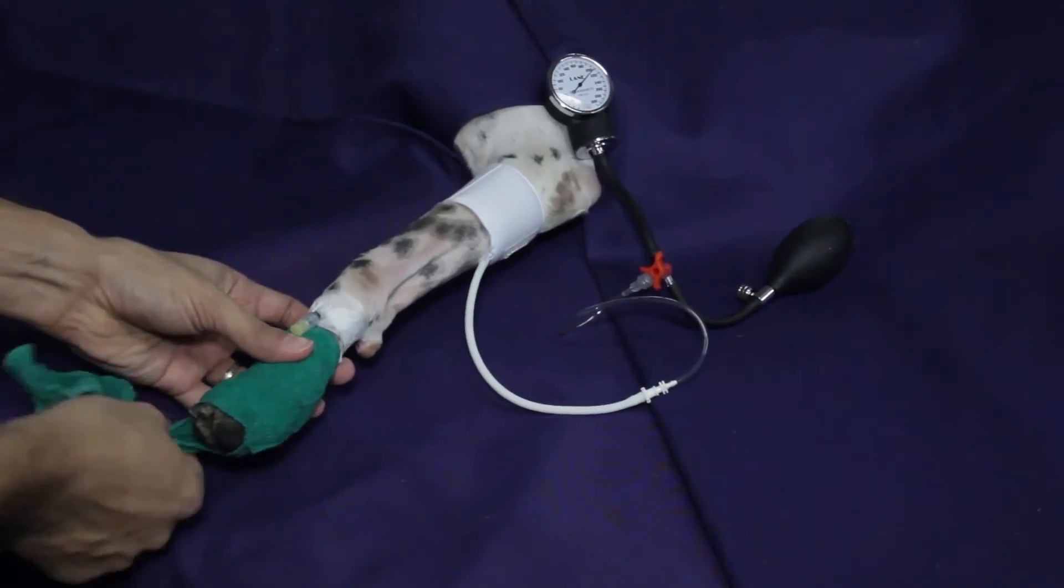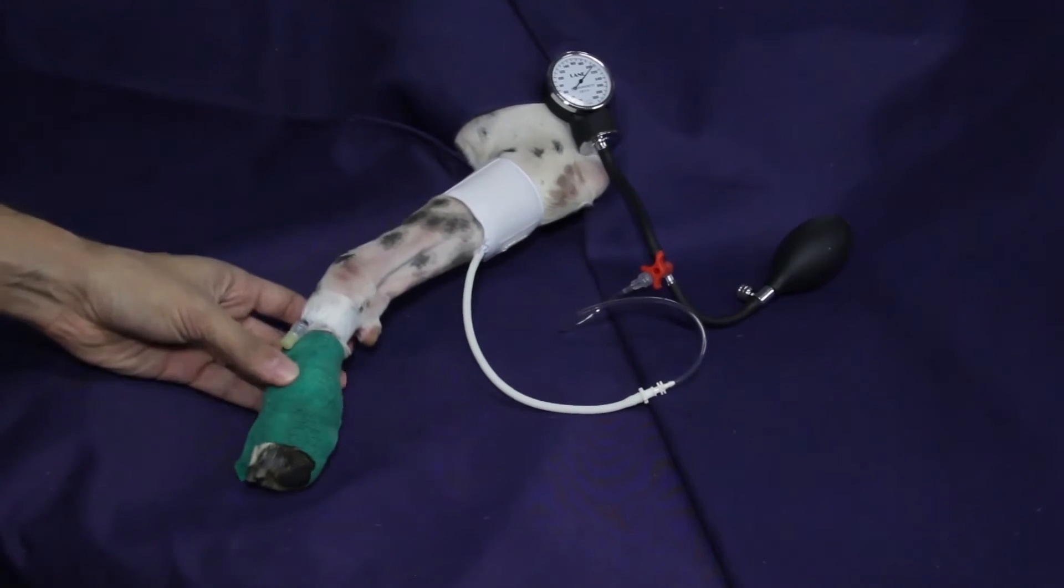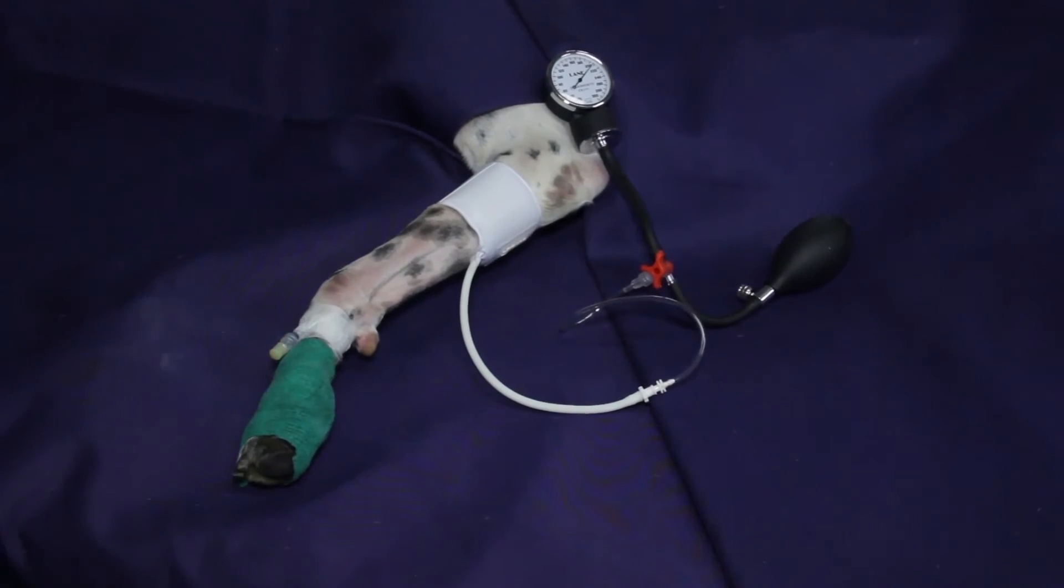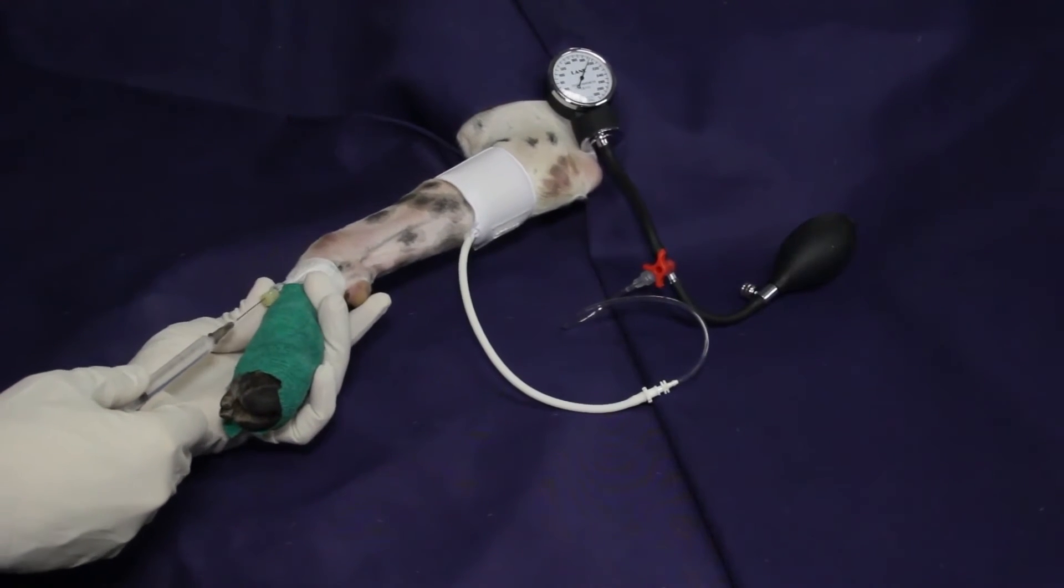Anesthesia of the limb distal to the tourniquet is achieved within 10 minutes following the injection. The tourniquet application must be restricted to less than 90 minutes to avoid tissue damage.